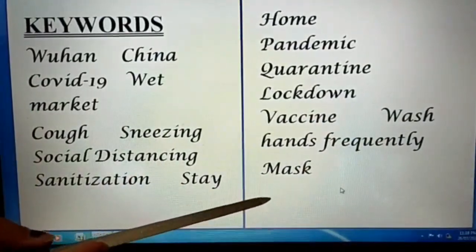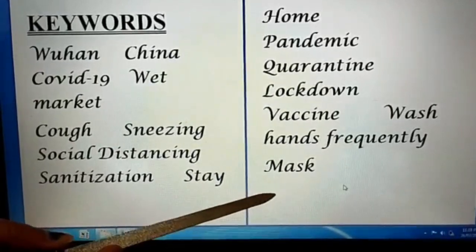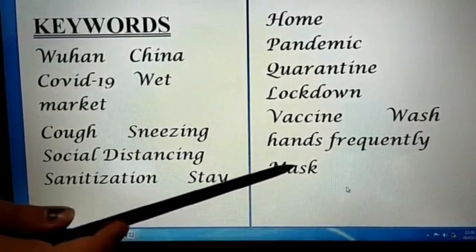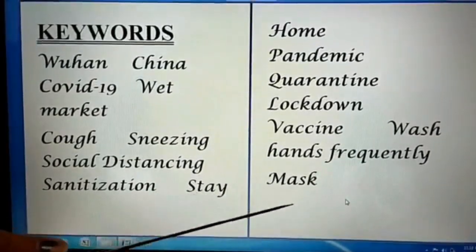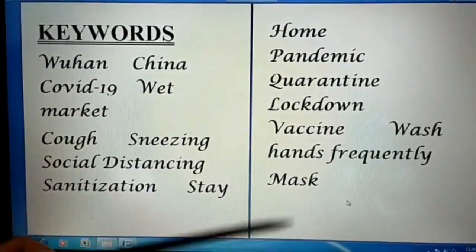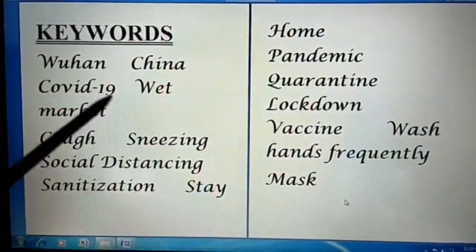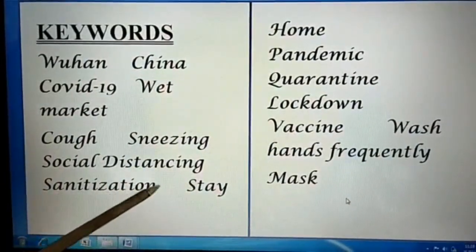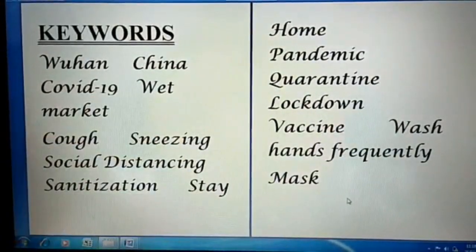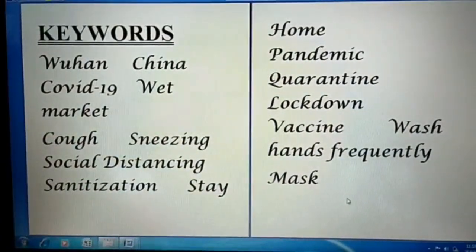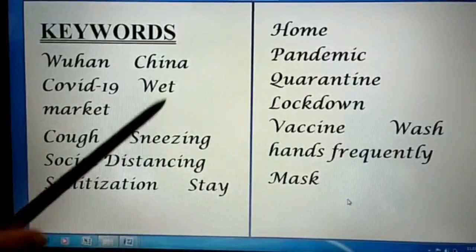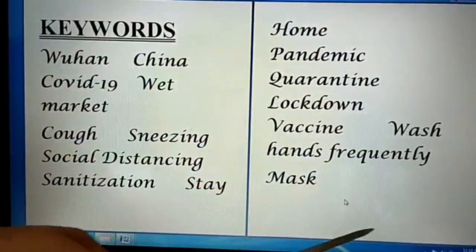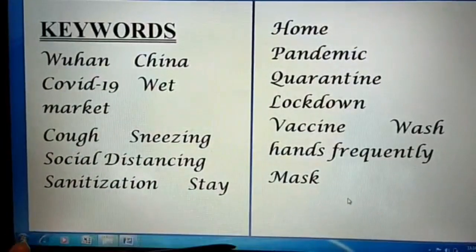The last keyword is mask — we should wear a mask if we feel like coughing or sneezing, but it should be properly worn and disposed of effectively so it cannot affect other people on contact. So these are the basic keywords: Wuhan, quarantine, lockdown, sneezing, cough, social distancing — all words we are hearing on news channels and social media. Combine all of these, make effective sentences, and come up with your effective writing.